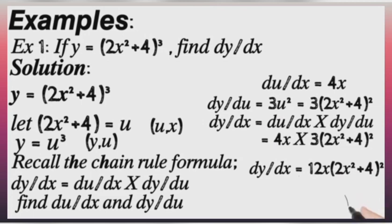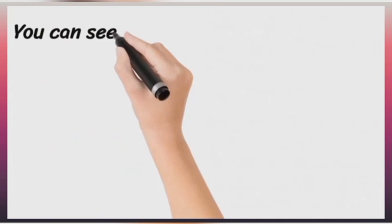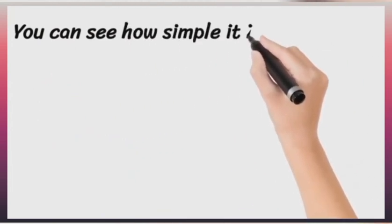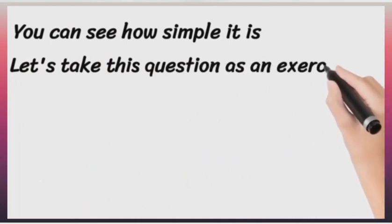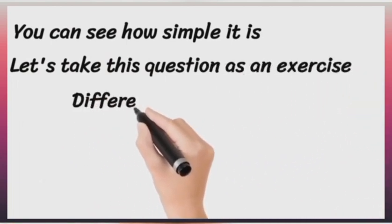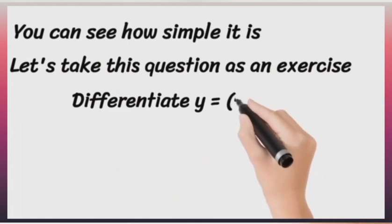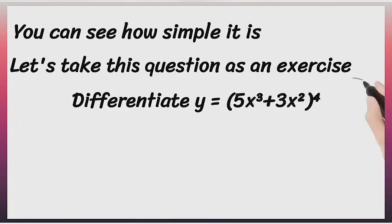So this is a very simple method of getting derivative using chain rule. The usage of chain rule is very simple. You can try this question as an exercise when you are less busy. You are to differentiate (5x raised to power 2 minus 3) squared raised to power 4.